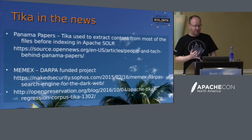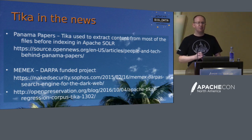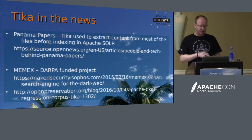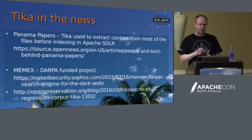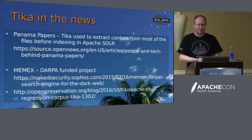Tika's been in the news recently. So, Panama Papers — hopefully everyone heard about those. The guys who did all the investigation on the Panama Papers used Tika for their text and metadata extraction. They used Apache Solr for the indexing, and then they used Neo4j for finding some of the links. It's really cool. What we'd love is if they would share with us the most common stack traces of the failures, but at the moment they're being a little bit sensitive even on that.